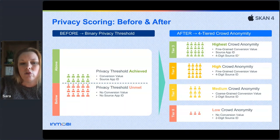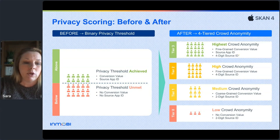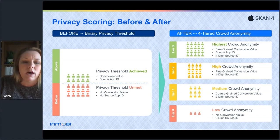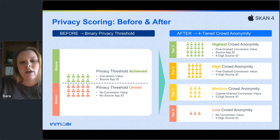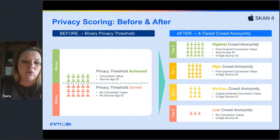Here's a quick visualization of those new privacy tiers. On the left you see the old pass/fail binary privacy score — if you don't hit a certain number of installs per campaign ID per day, the conversion value is withheld as null and you get no insight into which publisher's app drove a conversion. On the right you see the new four-tiered system, where the highest and lowest tiers are similar to earlier versions, but there's a new spectrum in between offering progressively more information depending on how Apple scores privacy.